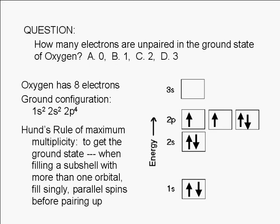Going back to the question, how many electrons are unpaired in the ground state of oxygen? The answer is two.